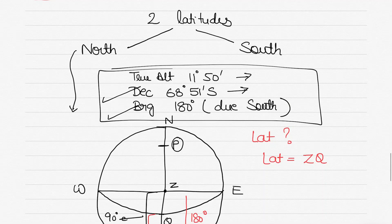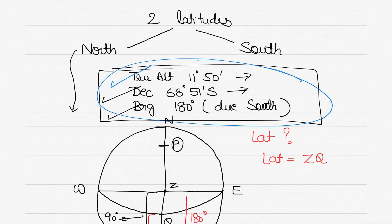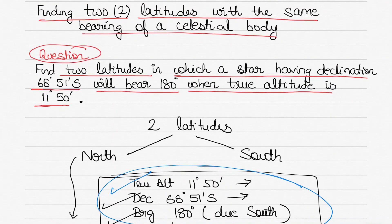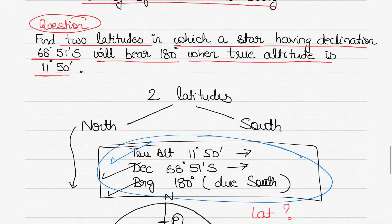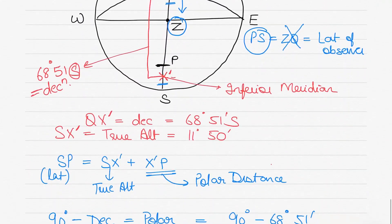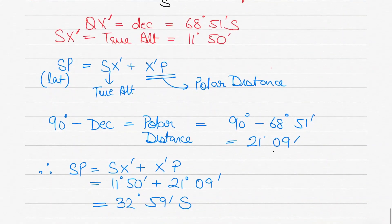So I've found two latitudes with the same true altitude, same bearing, and same declination. To do that, I placed myself once in the northern hemisphere and once in the southern hemisphere, while placing the body once on the observer's meridian and the other time on the observer's inferior meridian. If your knowledge of the PZX diagram, circumpolar bodies, and the rational horizon diagram is clear, you'll find it easy to solve these questions. Thanks for watching and for supporting the channel.